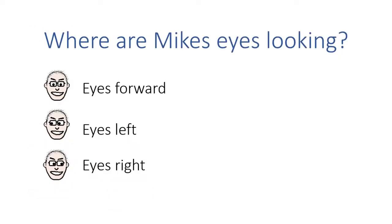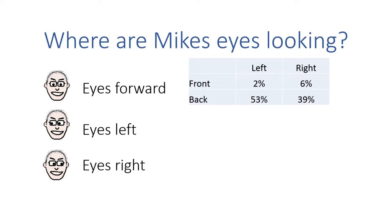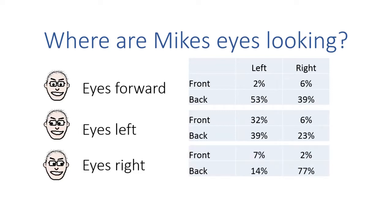Here's the first characteristic: where are Mike's eyes looking? When his eyes are looking forward, I can collect the data and see exactly where he's playing that ball. I can also look at when his eyes are to the left — I can see a similar data set showing where the ball is played: front, back, left and right. And then when his eyes are facing towards the right, again, another data set.